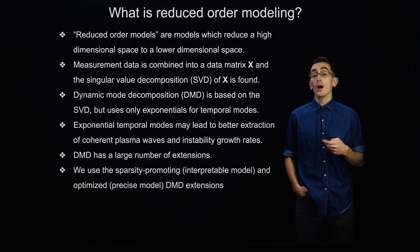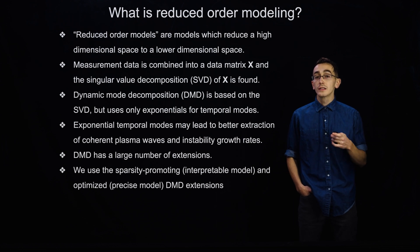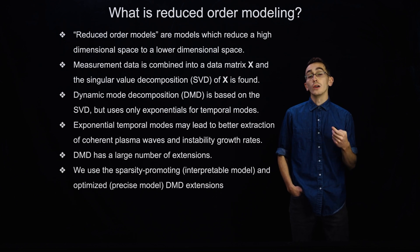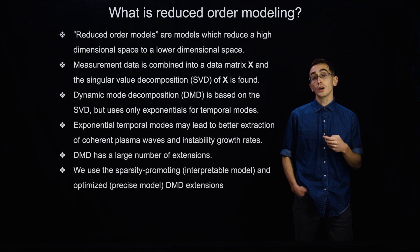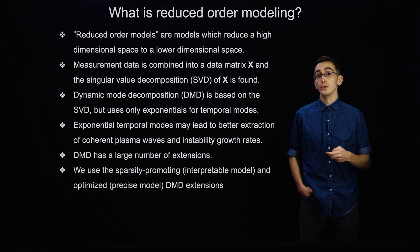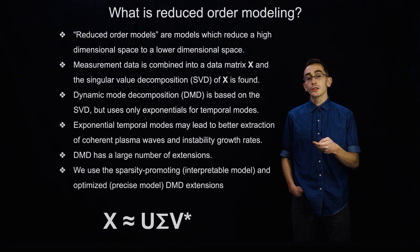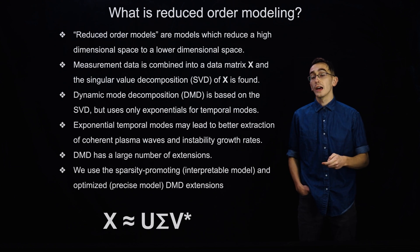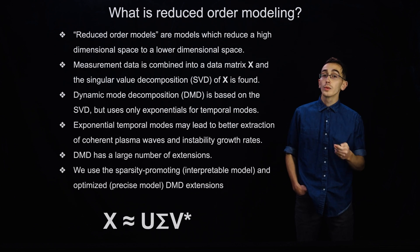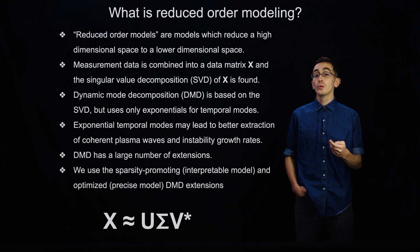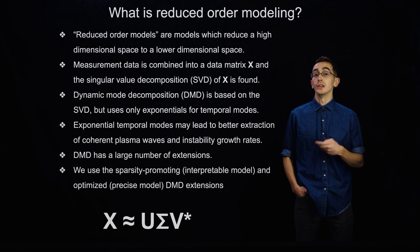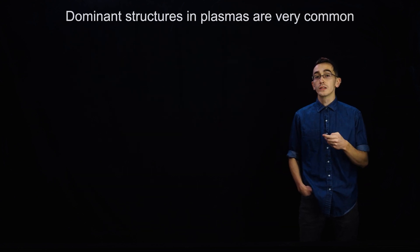In this paper, we use the sparsity promoting and optimized DMD extensions. The sparsity promoting extension allows us to get an interpretable model, which is really helpful for physical understanding of the modes that DMD picks out. The optimized extension is really good for precise reconstructions of the signals, which is important if you want to do something like real-time control or forecasting into the future. Just a reminder: when you take the SVD of a matrix X, you get matrices U, sigma, and V. U contains the spatial dependence, V contains the temporal dependence, and sigma is a diagonal matrix of singular values — essentially weights that tell you how important each spatiotemporal mode actually is.